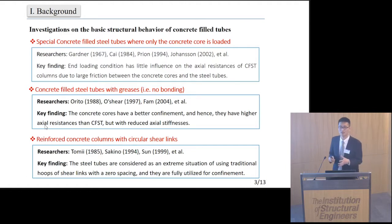To further enhance the confinement, Orito et al. focused on concrete-filled steel tubes with grease, that is the unbonded steel tube concrete. This kind of column has better confinement and higher axial resistance than traditional CFST but with reduced axial stiffness.